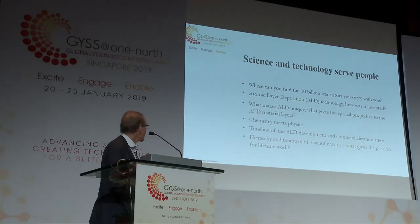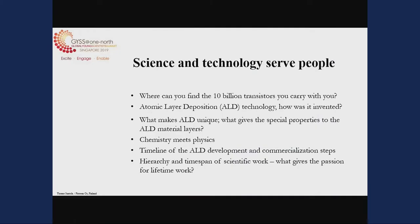In the introduction, I had the statement that you may carry 10 billion transistors in your pockets. We discuss the technology — a very rough general introduction of atomic layer deposition technology, ALD technology, how it was invented, what makes ALD unique, and what are the special properties of the ALD material layers. We can find that with this technology, we can make physics and chemistry meet each other, because we are bringing chemistry to the atomic level. We also take a general view of the timeline of ALD development, and more generally, the hierarchy of time span of scientific work, and what gives the passion for lifetime work.